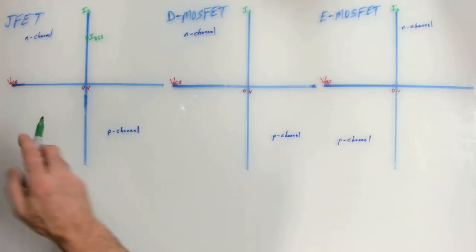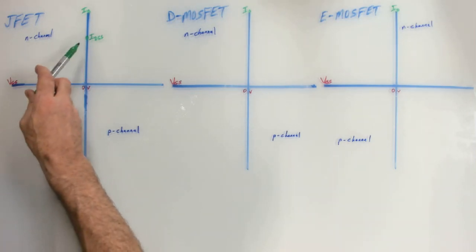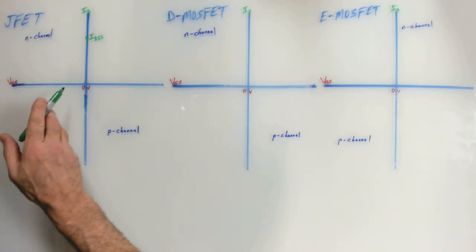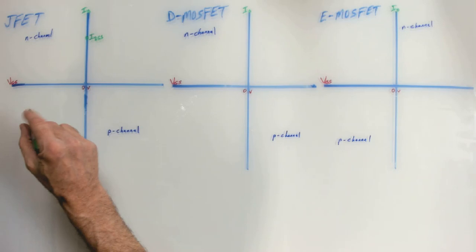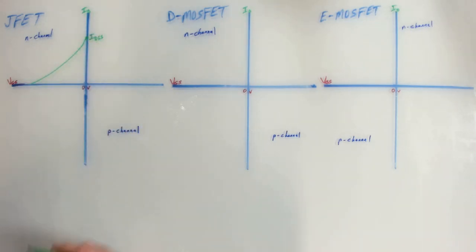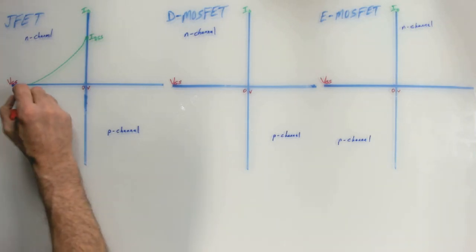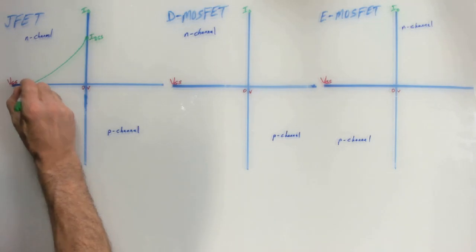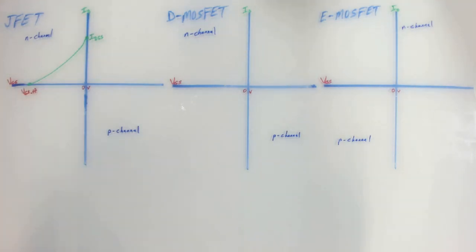Then you add negative voltage and you start to narrow the channel, and drain current will decrease as the gate voltage is increased in the negative direction. So we have this kind of a function where drain current would go down. It's not linear, and it'll reach a point where some value of gate voltage known as VGS off will result in no current flowing. So that's the N-channel JFET.